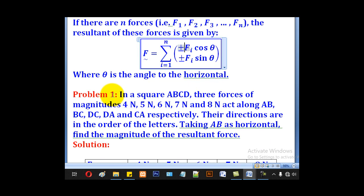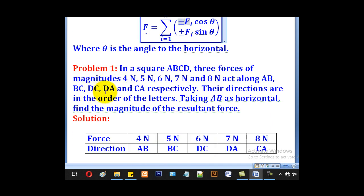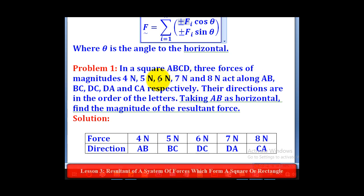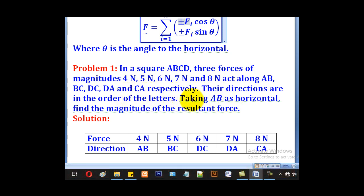We shall use that knowledge to go through this problem. Problem 1: In a square ABCD, three forces of magnitudes 4, 5, 6, 7, and 8 N act along AB, BC, DC, DA, and CA respectively. Their directions are in the order of the letters. Taking AB as horizontal, find the magnitude of the resultant force.